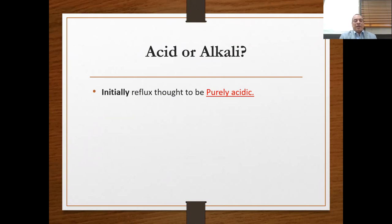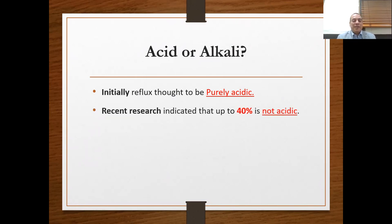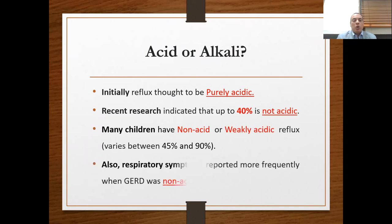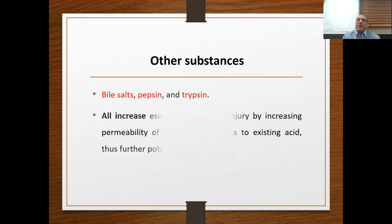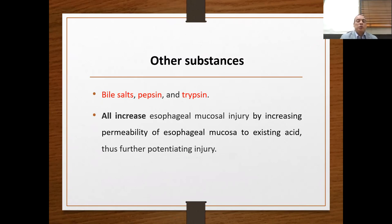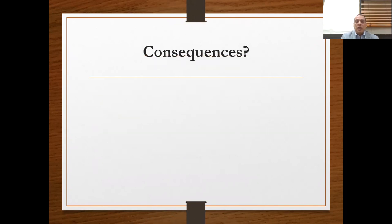There is a large debate about the type of reflux — whether acidic or alkaline. Initially, reflux was thought to be purely acidic. However, recent research indicates that up to 40% of reflux is not acidic, and many children have non-acid or weak acid reflux. Moreover, respiratory symptoms are reported more frequently when GERD is non-acidic. Other substances may be incriminated in reflux, including bile salts, pepsin, and trypsin, which increase esophageal mucosal injury by increasing permeability, and are more toxic in the presence of acid reflux.